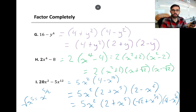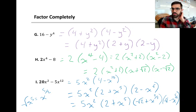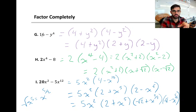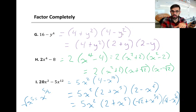Three more examples — this is where it gets more involved, with all the nuances and tricks. For example g, doing difference of squares gives us a value of 4 and b value of y squared. But we notice one of those resulting terms is also a difference of squares — a difference of squares inside a difference of squares. So we factor that term as well. The term with the plus sign is not a difference of squares, so we leave it. The second one is, with a value 2 and b value y. Here's our final answer.